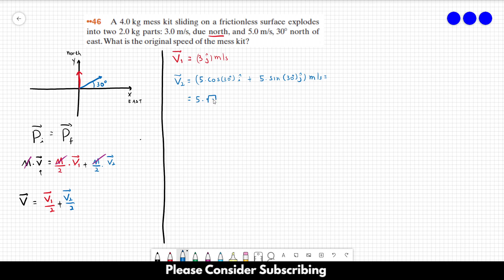We can simplify this. This is equal to 5 times the square root of 3 over 2 in the i direction plus 5 over 2 in the j direction, in meters per second.